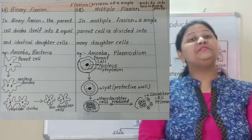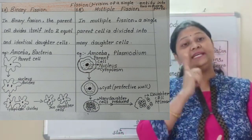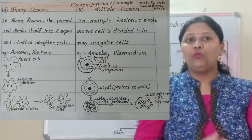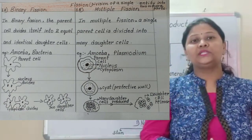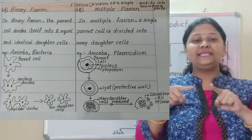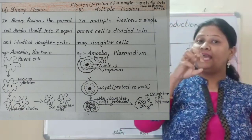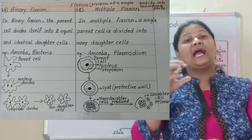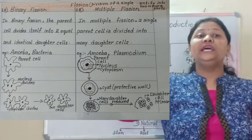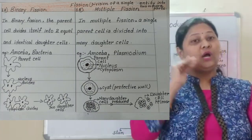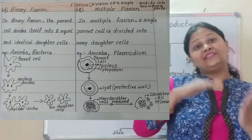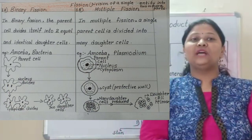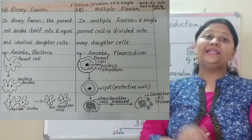Now coming to multiple fission — it can also be seen in amoeba, but in unfavourable conditions, when there is a lack of water. When there is lack of water, the amoeba will form a cyst around itself. Inside that, the parent nucleus will divide into many nuclei, and then the cytoplasm will go around each nucleus to form many cells. Once favourable conditions arise, the cyst will burst and many cells come out from one parent. That is multiple fission.